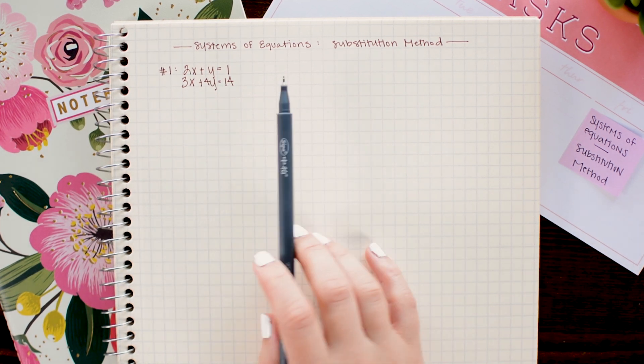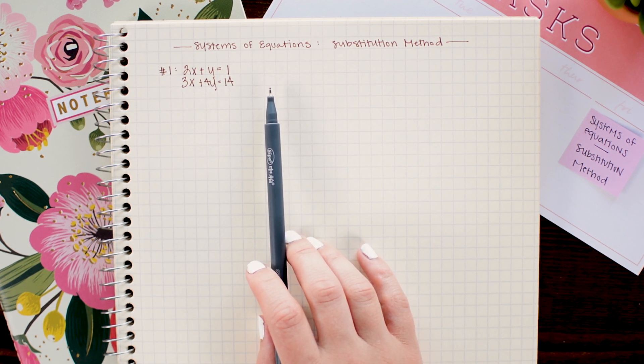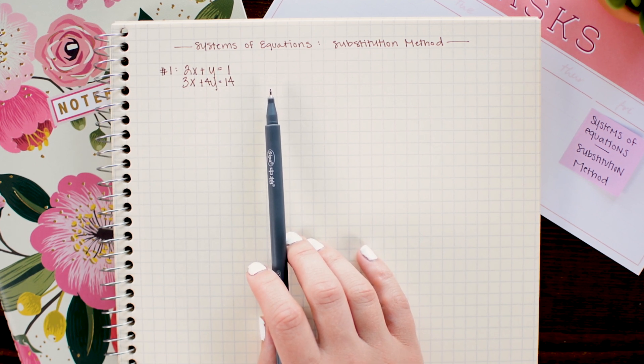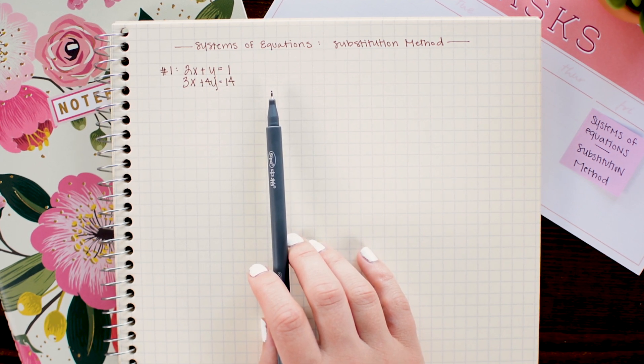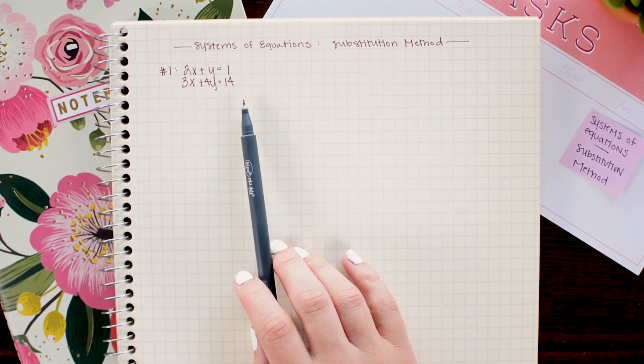Whenever you are given a system of equations and asked to solve, what that really means is that you have two or more equations and you need to find the intersection point or points. Now the most common case you're going to run into is being given two linear equations and looking for their intersection point.